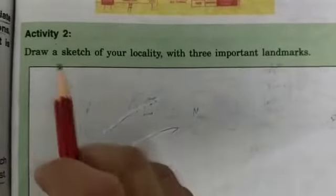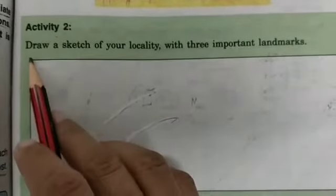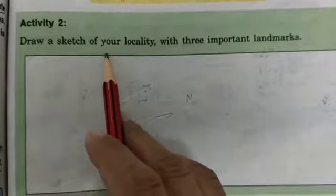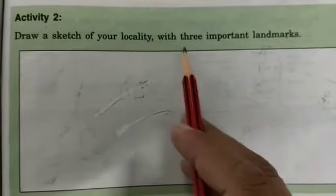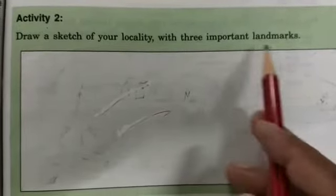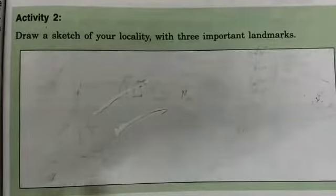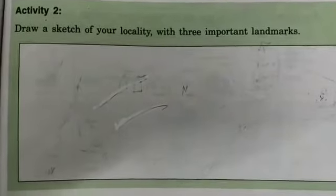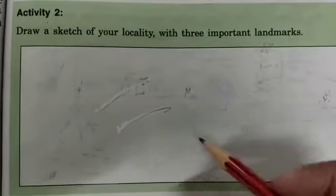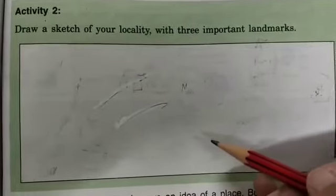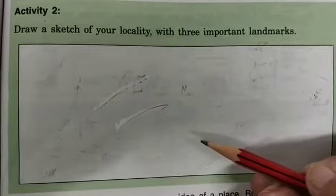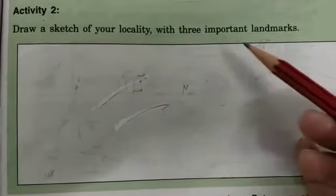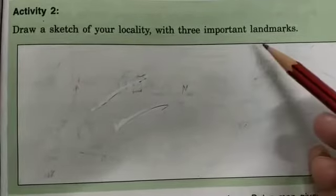Here is one activity: Draw a sketch of your locality with 3 important landmarks. This is your activity - you have to draw your locality and include three landmarks.